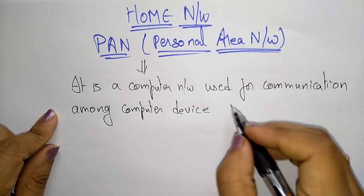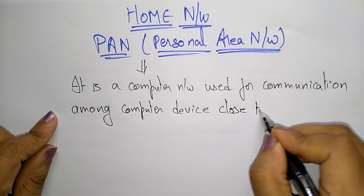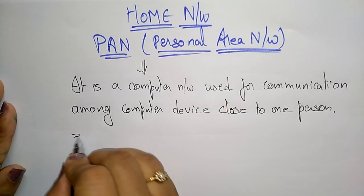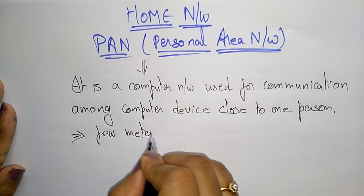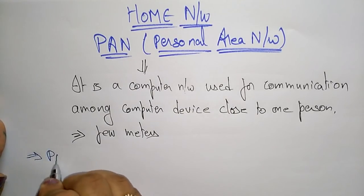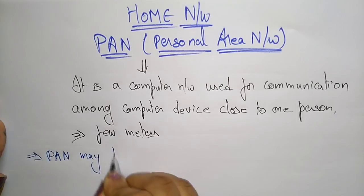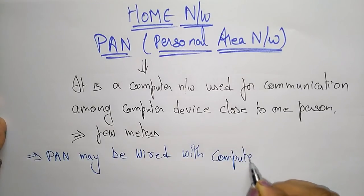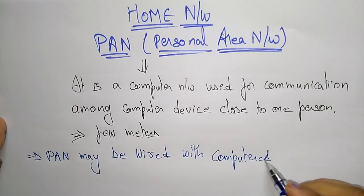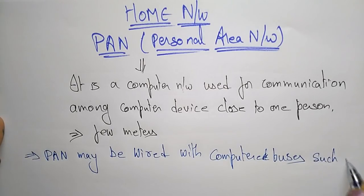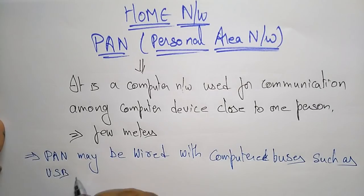The devices in a PAN must be close to one person. The reach of a PAN is typically a few meters — all devices should be present within a few meters of the master gadget. A PAN may be wired using computer buses such as USB (Universal Serial Bus) and FireWire.